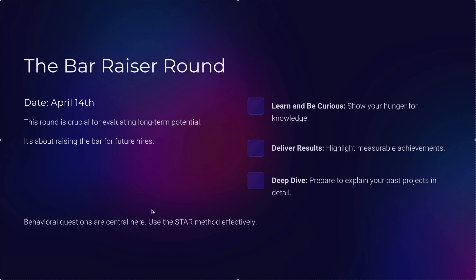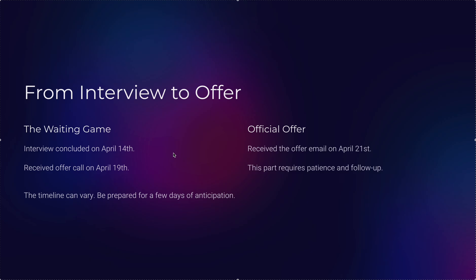After the interviews concluded on April 14th, I received the offer call on April 19th and the official offer via email on April 21st. This part requires patience. You can follow up by replying to the email Amazon sends. The timeline can vary — it may be shorter or longer than five days depending on the offer and location.